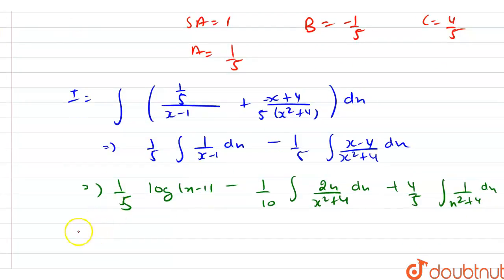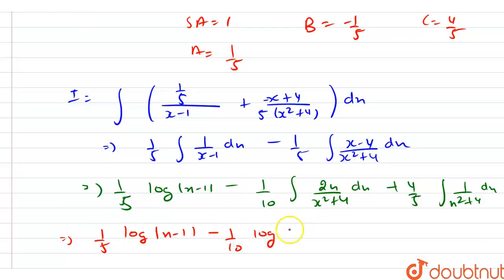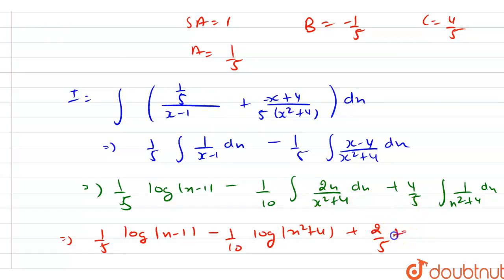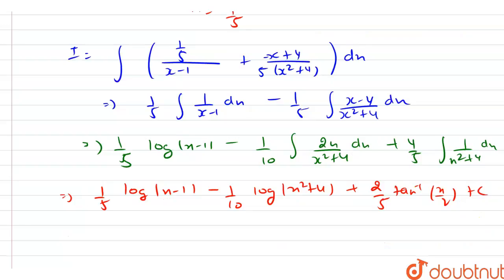This gives the final answer: (1/5) log|x minus 1| minus (1/10) log(x squared plus 4) plus (2/5) tan inverse(x/2) plus C, where C is the integration constant.